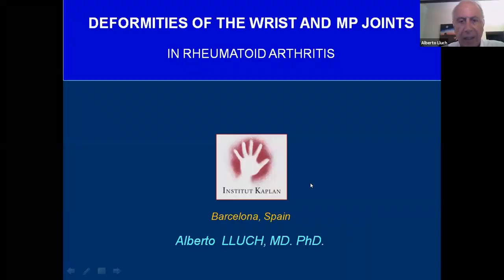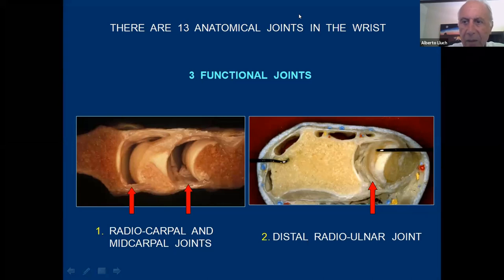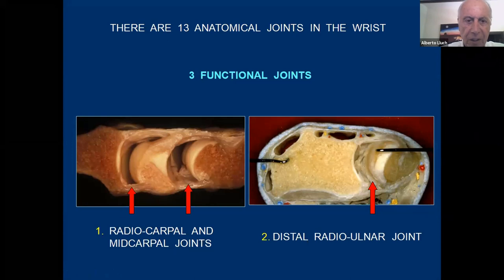Thank you for the invitation. It will be a pleasure to talk to you about the deformities of the wrist and the metacarpophalangeal joints. There are 13 anatomical joints in the wrist, but functionally there are three joints that we'll talk about in a moment.